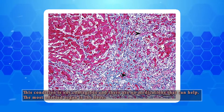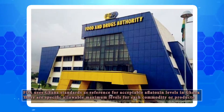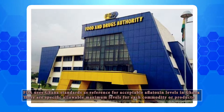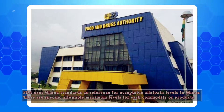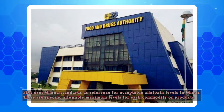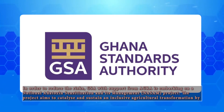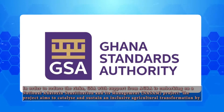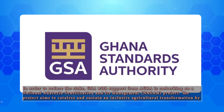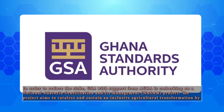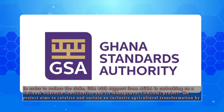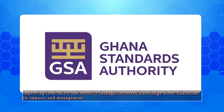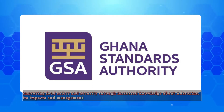The most affected organ is the liver. FDA uses Ghana standards as reference for acceptable aflatoxin levels in Ghana. There are specific allowable maximum levels for each commodity or product. In order to reduce the risk, GSA with support from AGRA is embarking on a national aflatoxin sensitization and management project. The project aims to catalyze and sustain an inclusive agricultural transformation by improving food safety and security through increased knowledge about aflatoxins, its impact and management.